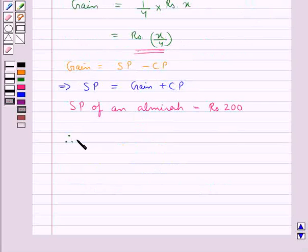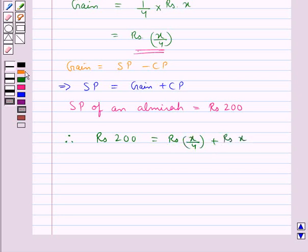So we get Rs. 200 is equal to Rs. X/4 plus Rs. X. Or this means we have Rs. 200 is equal to Rs. X/4 plus Rs. X. That is, Rs. 200 is equal to Rs. 5X/4.